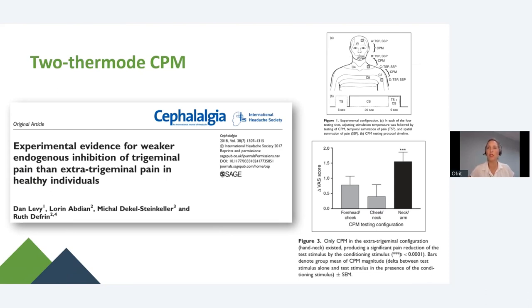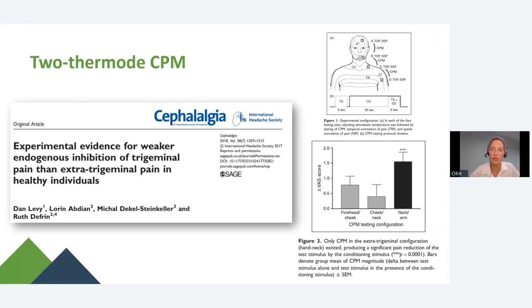A classic example of why two-thermode CPM is useful: you cannot put somebody's head in a cold water bath. Two-thermode CPM was applied to the face/neck and neck/shoulder to investigate whether the trigeminal area is affected by CPM — relevant because headaches are the second most prevalent chronic pain condition after low back pain. They found that when any stimulus was placed within the trigeminal area, CPM was ineffective, versus when none of the stimuli were in the trigeminal area.